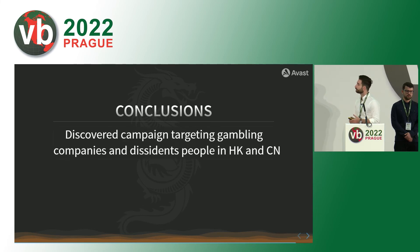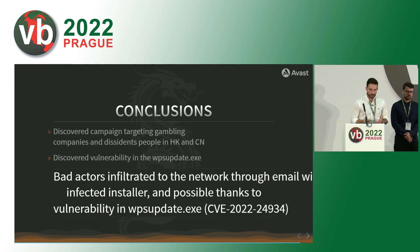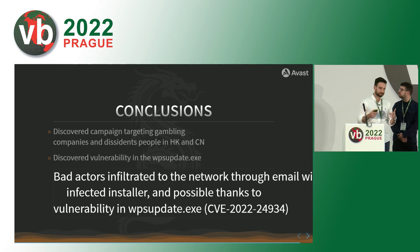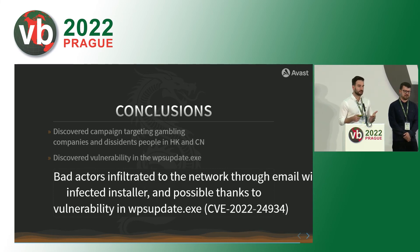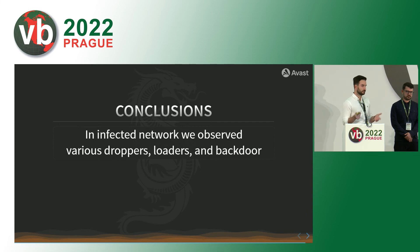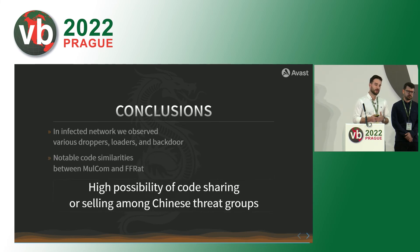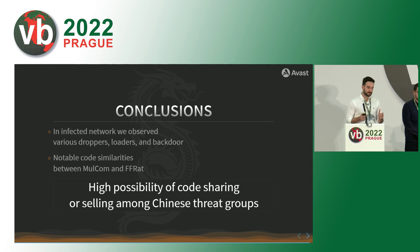Okay, that was it. We will wrap things up. We discovered a campaign targeting gambling companies and dissidents. We discovered a vulnerability in the WPS update process. We think the bad actors infiltrated networks with infected installers or possibly thanks to the vulnerability in the WPS updater. In the infected network we observed various droppers, loaders, and a backdoor. There were notable code similarities between FFRAT and Malcolm, leading us to think there is a high possibility of code sharing among Chinese threat groups.